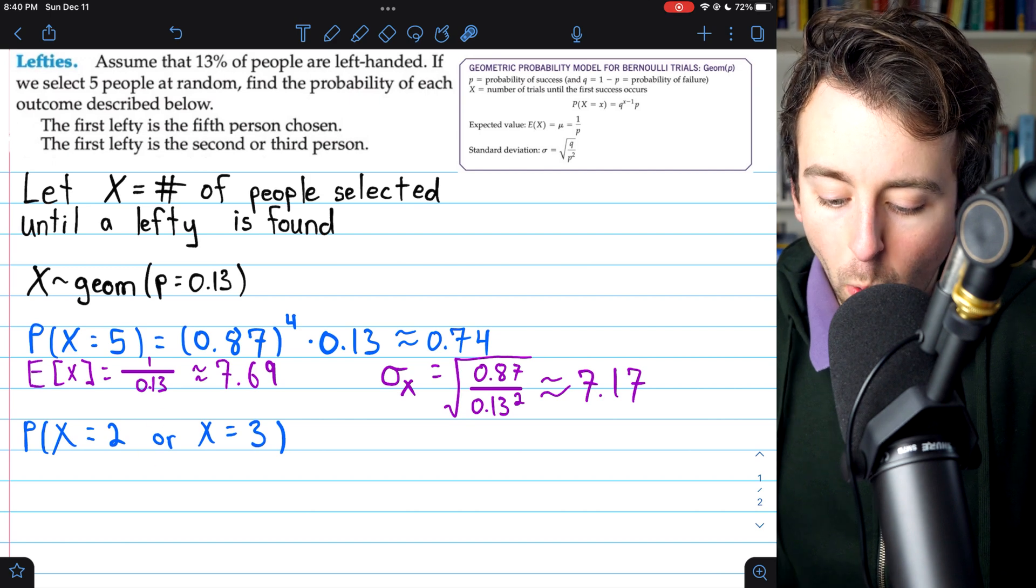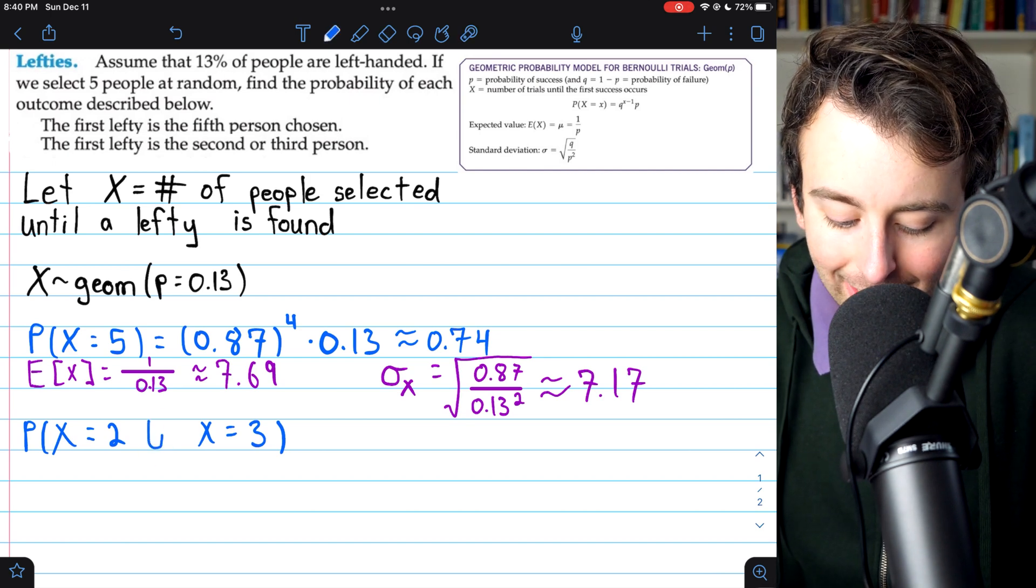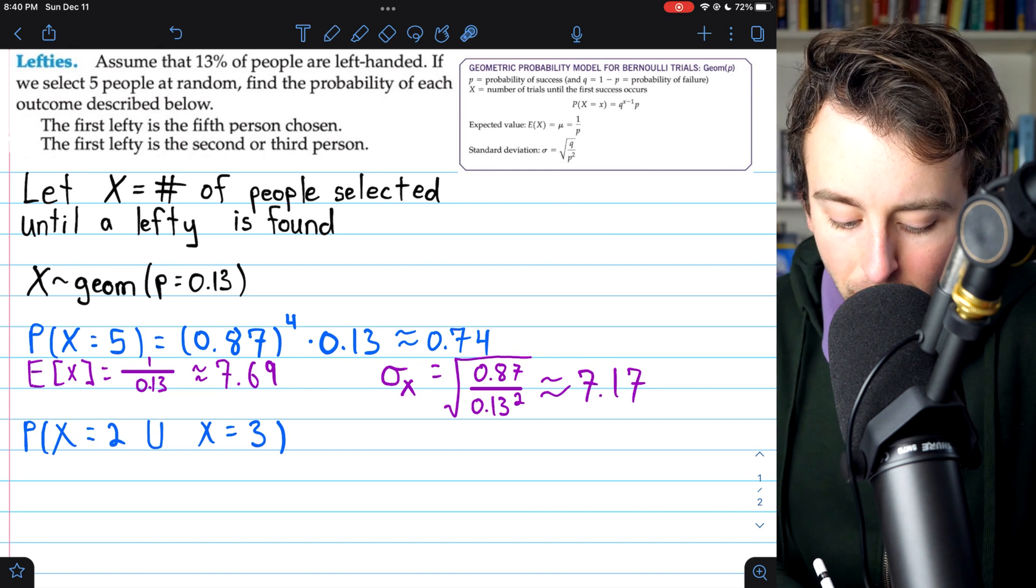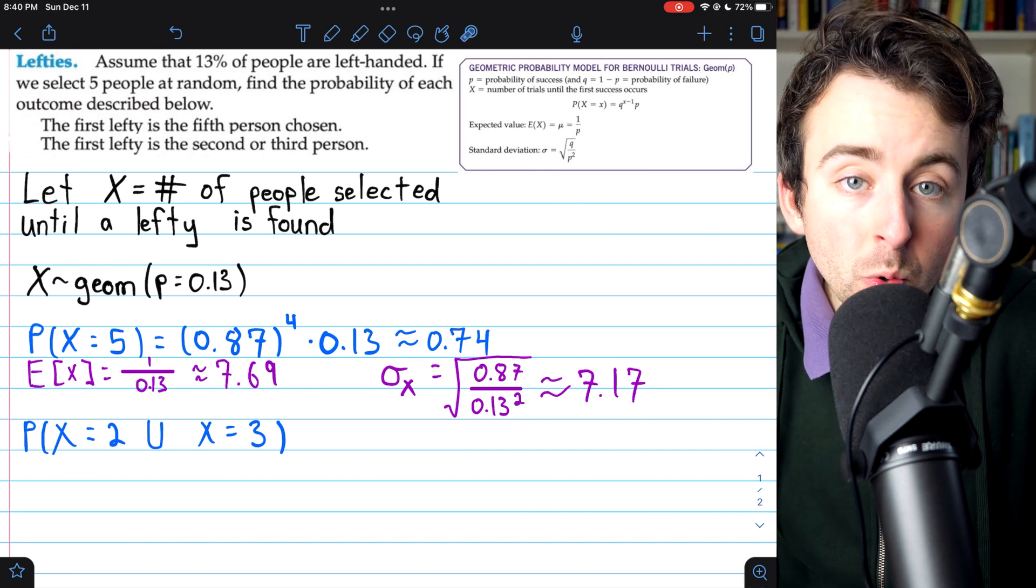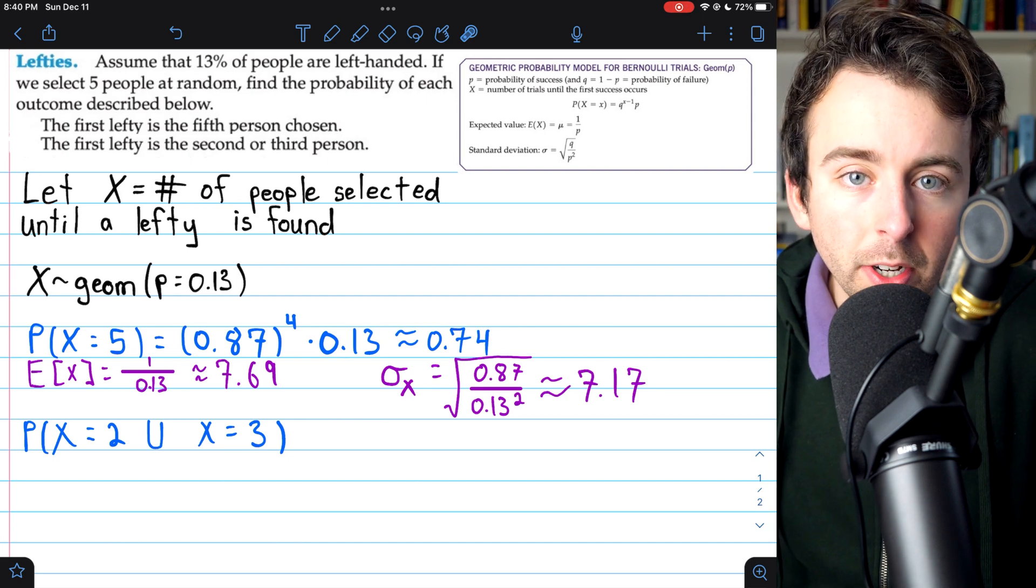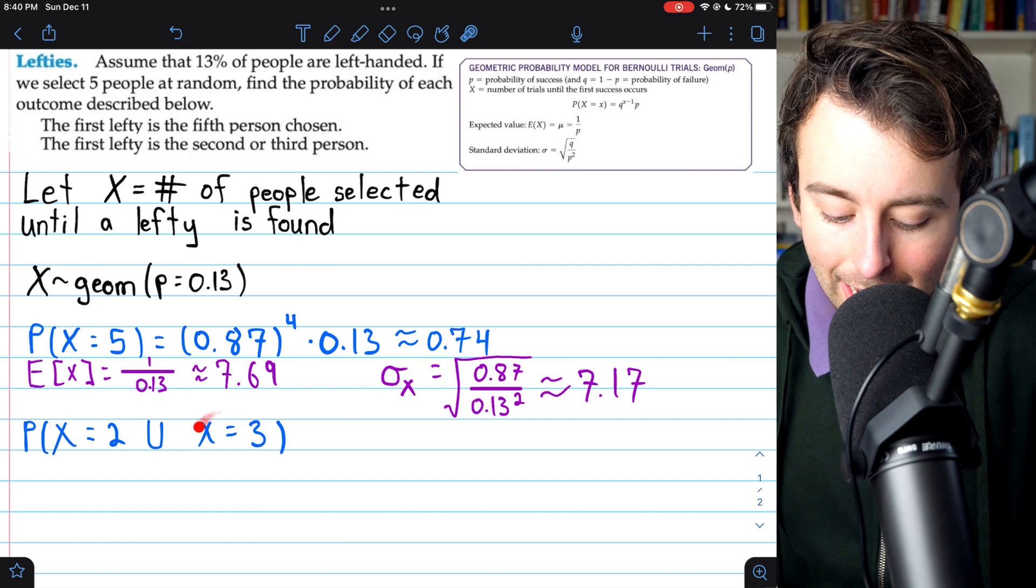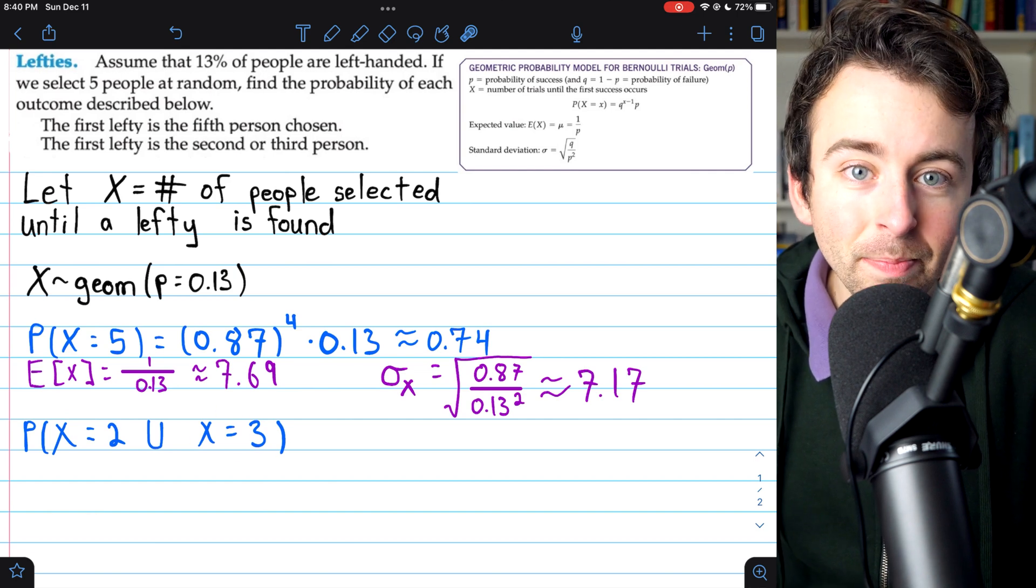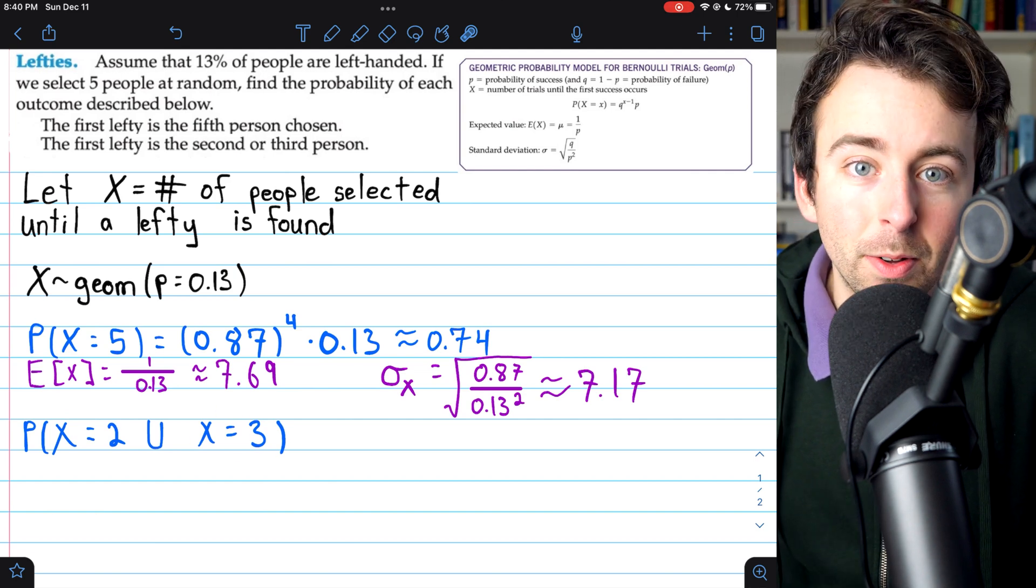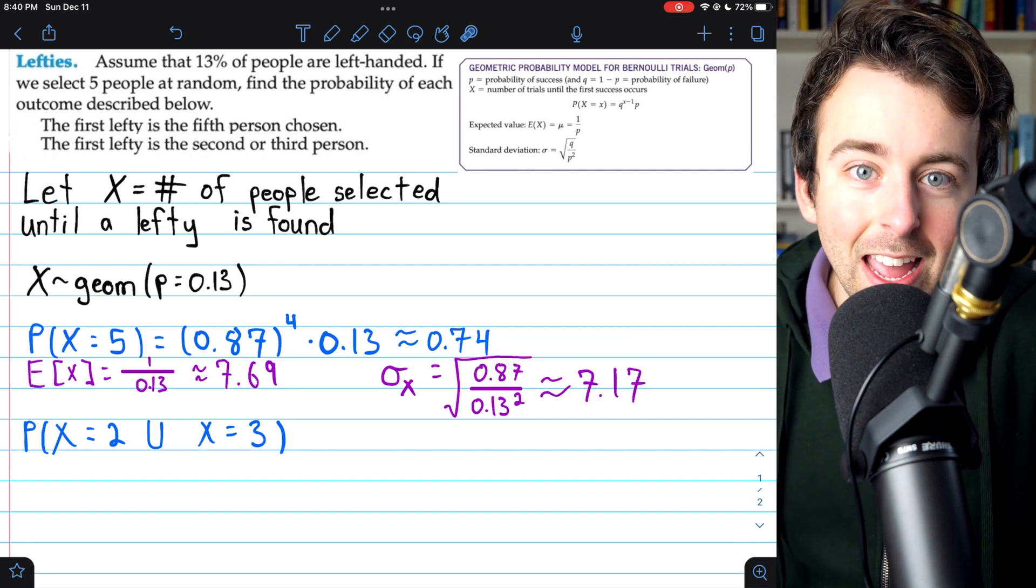And in fact, now that I've written it with or, I'm just going to switch it to union notation, which is what I prefer. The way we calculate the probability of a union of events depends on if the events are mutually exclusive or not. Is it possible that x could equal 2 and x could equal 3 at the same time? Well, that's not possible. Either the first lefty is the second person or the third person. It can't be both.